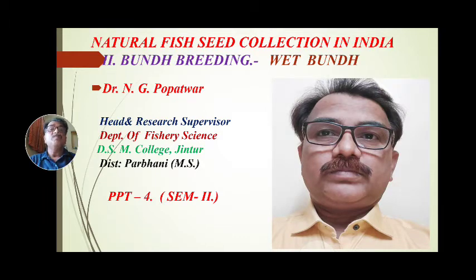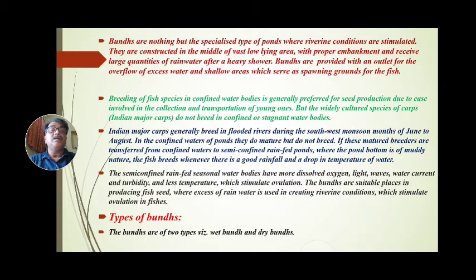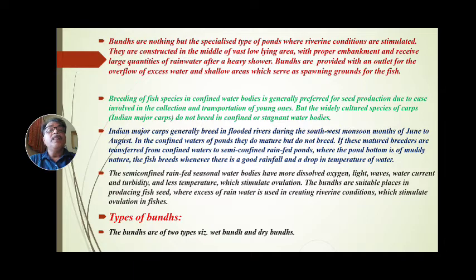Bunds are nothing but specialized types of ponds where riverine conditions are stimulated. They are constructed in the middle of fast low-lying areas with proper embankment and receive large quantities of rainwater. After a heavy shower, in such confined low-lying areas, fishes are spawned and bred. This is called bund breeding.